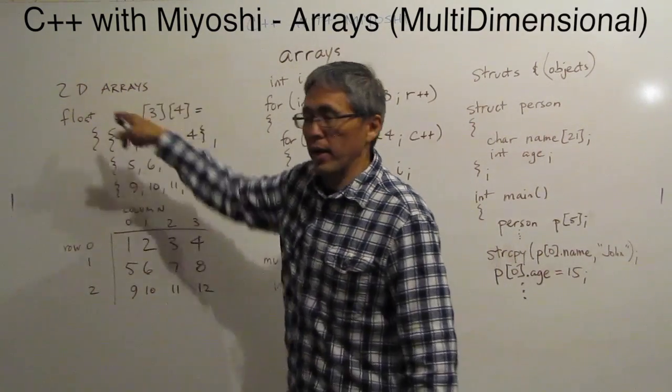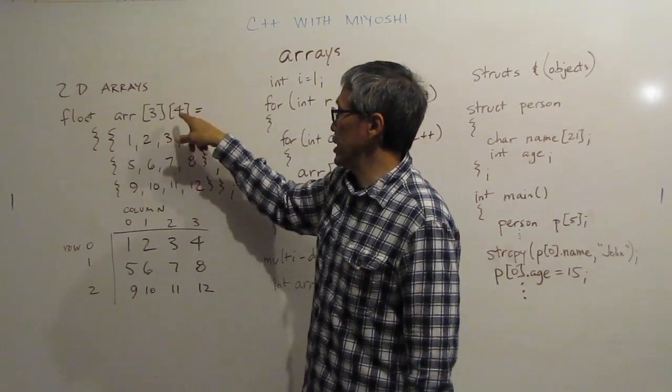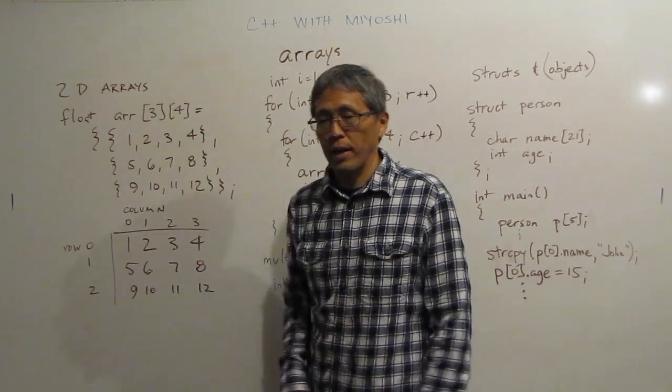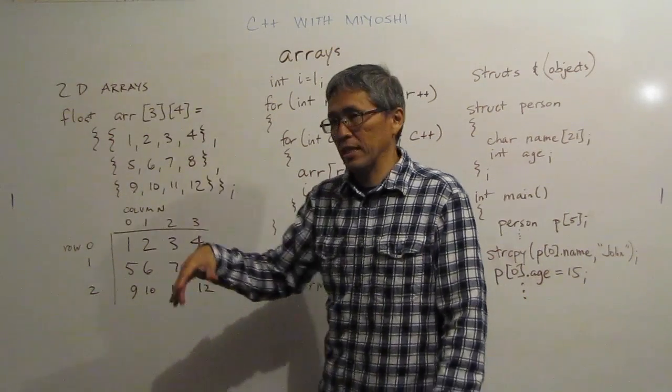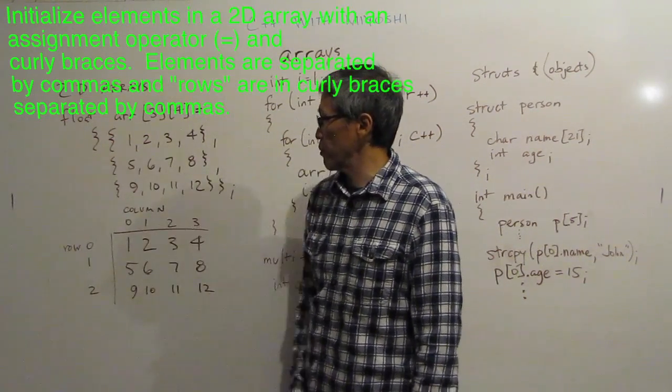So here we have a 2D array. We're going to have two dimensions. I have a float array, three in square brackets, four in square brackets. I'm going to assign the value. I'm just going to initialize and declare it at the same time.